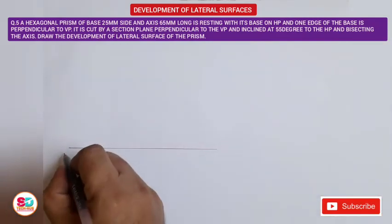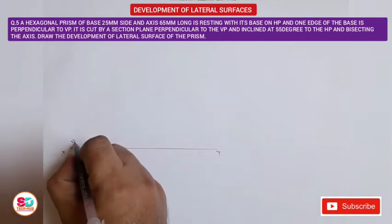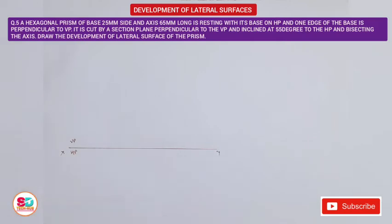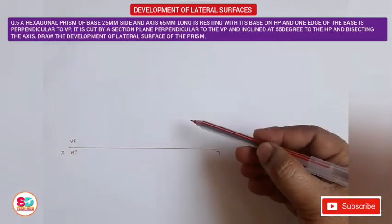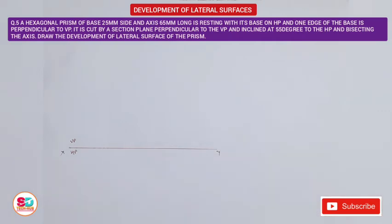The XY line is the reference line between the vertical plane and the horizontal plane. Above the XY line is the vertical plane showing the front view, and below is the horizontal plane showing the top view. To draw the hexagonal prism, we first draw a circle of radius equal to the base edge.